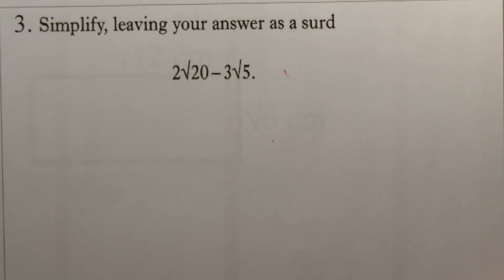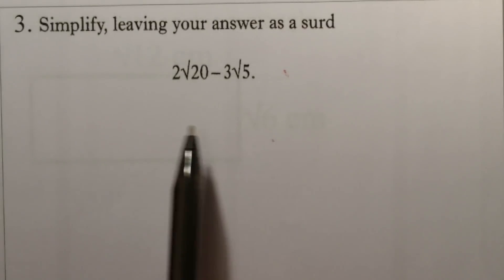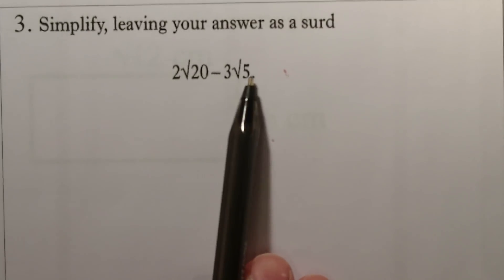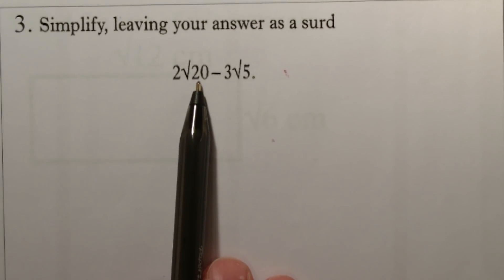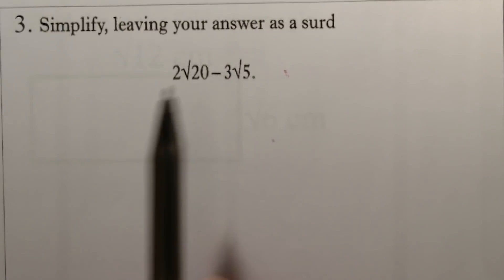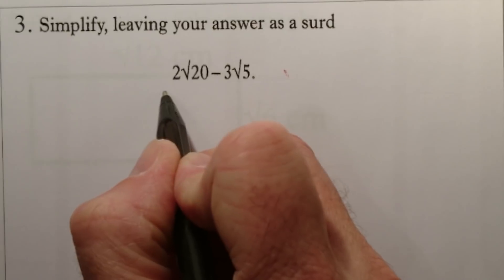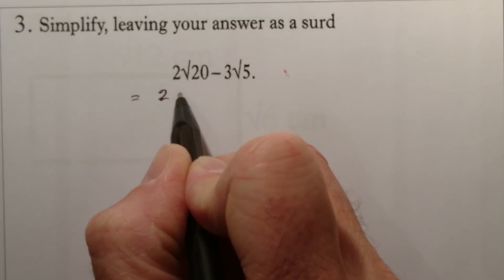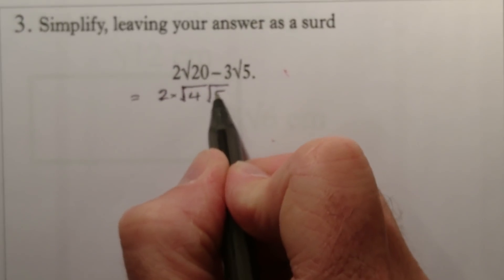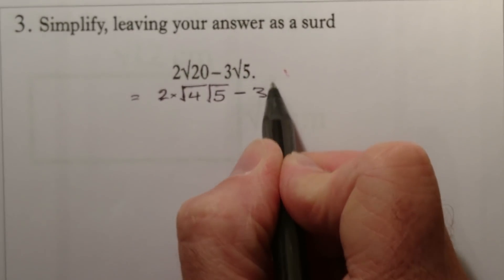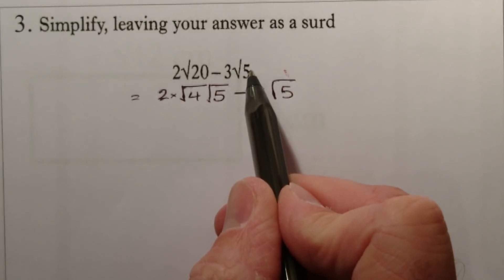On to question 3: simplify, leaving your answer as a surd. This is all non-calculator work, so no decimal answers — we're trying to simplify the surds. Again I can see a clue: root 5 is already in its simplest form, so that's my clue. I'll be subtracting because I'll get a root 5 out of the 20. Simplifying root 20 down: I've got 2 outside, and I break the root into root 4 times root 5.